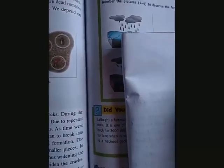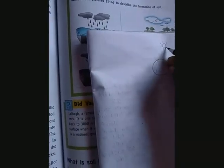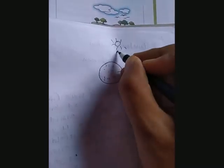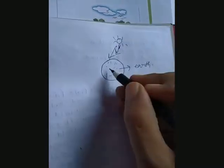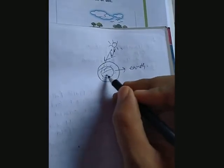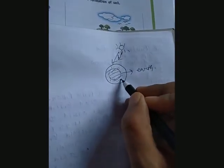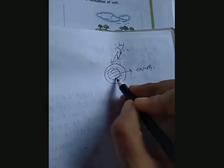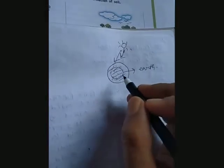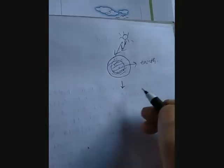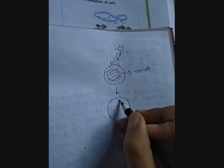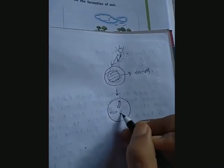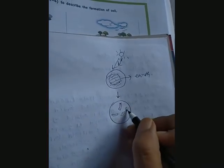In the daytime, due to the sun rays, the surface of the earth becomes warmed, and at night the surface becomes cooled. As a result, there are some cracks developed on the earth's surface due to repeated heating and repeated cooling.